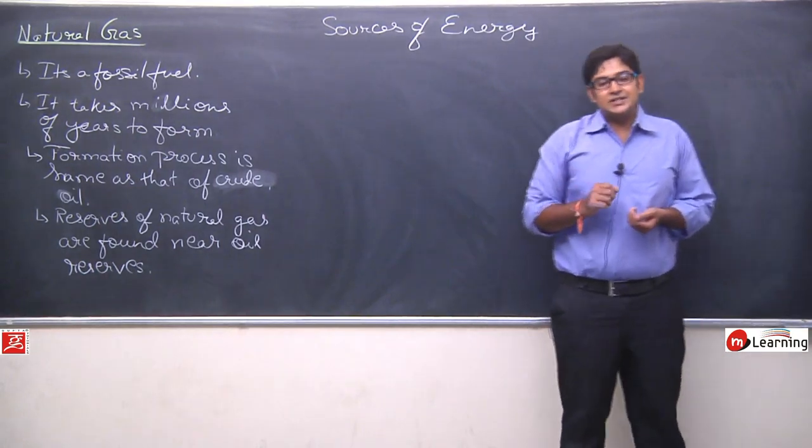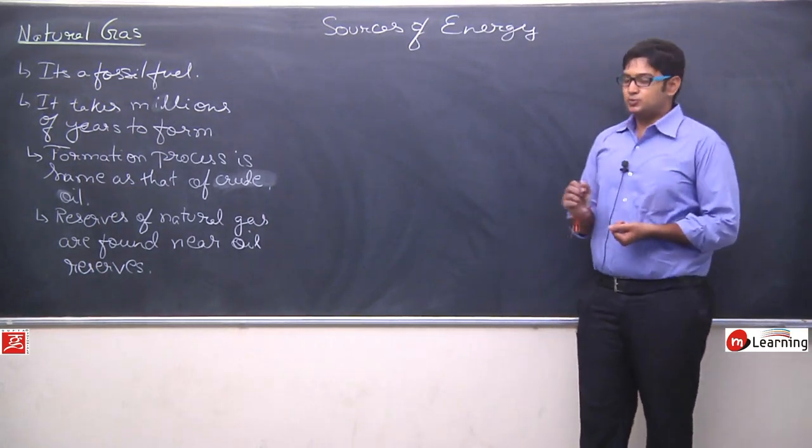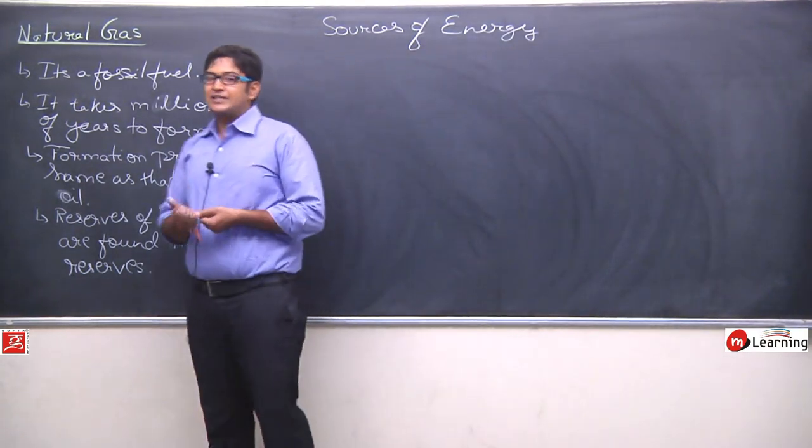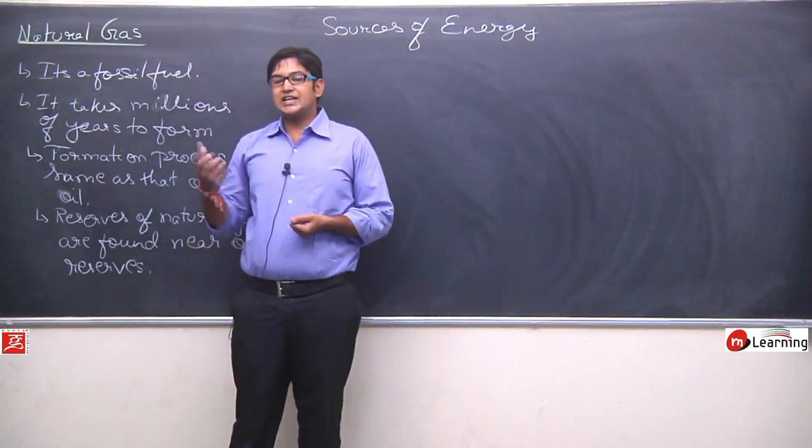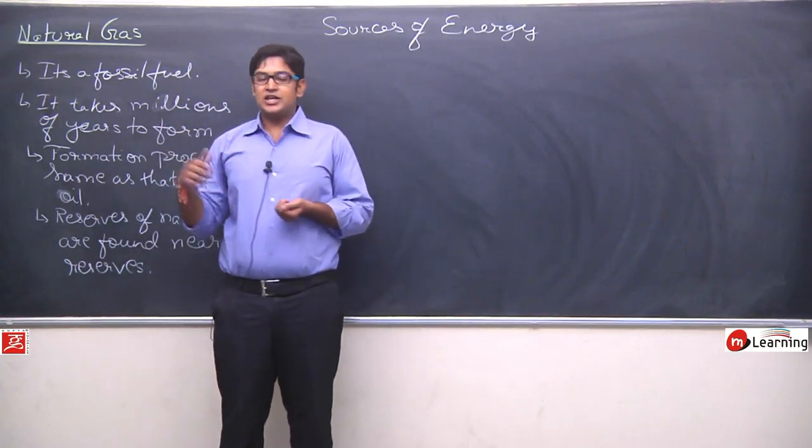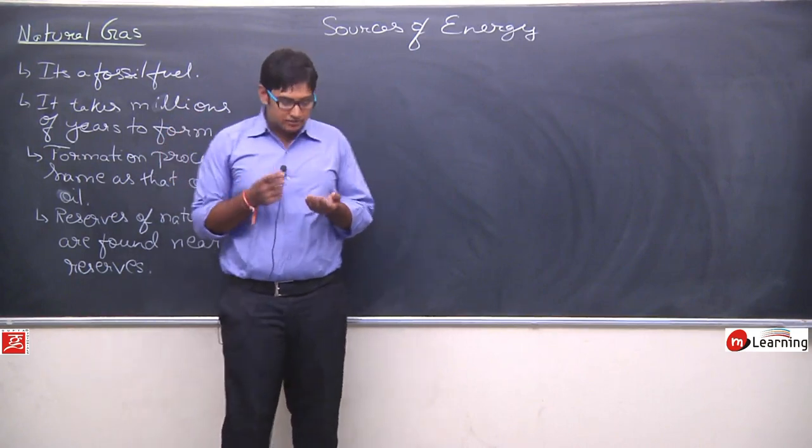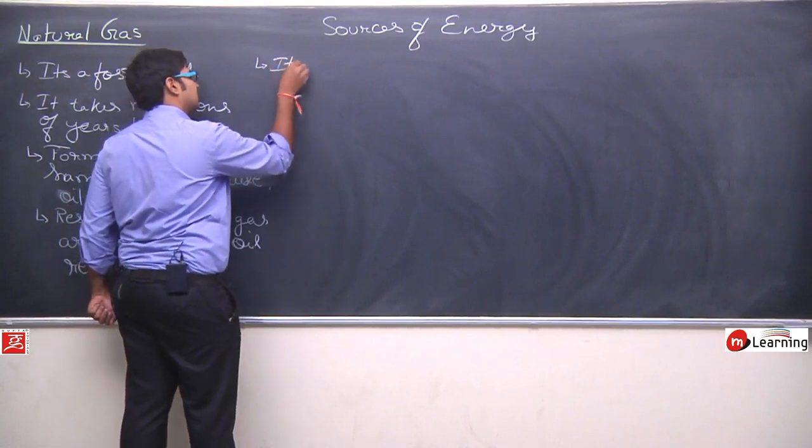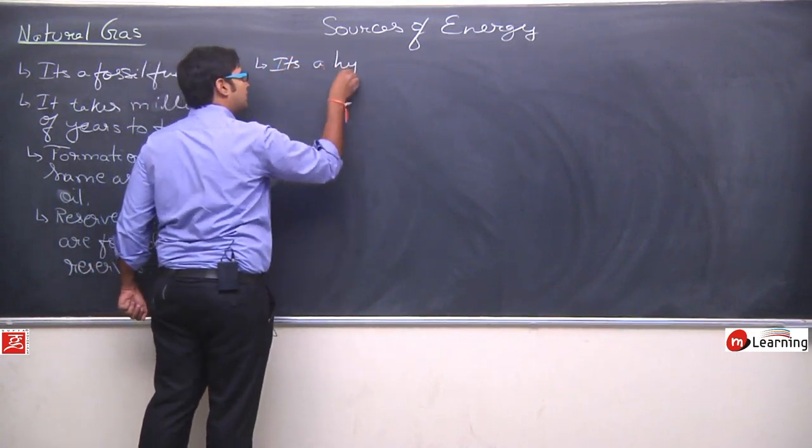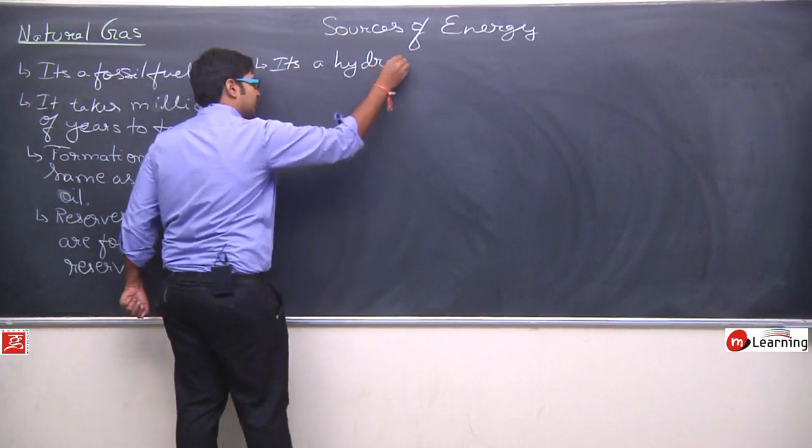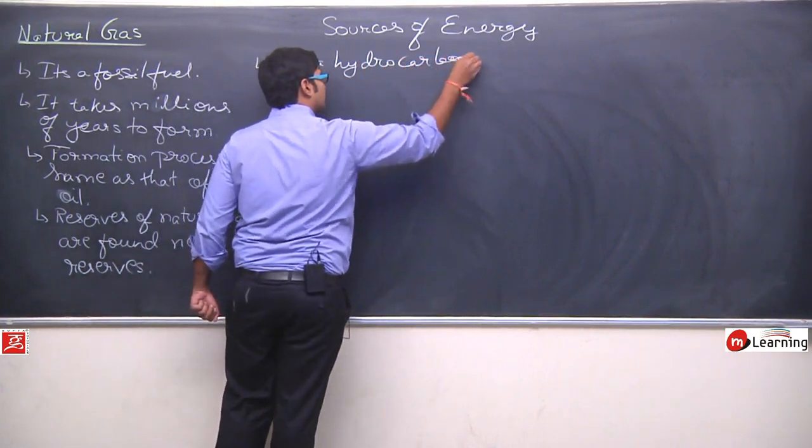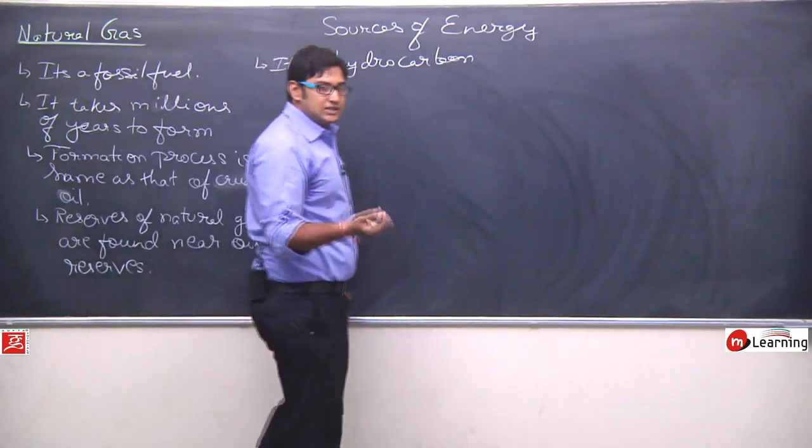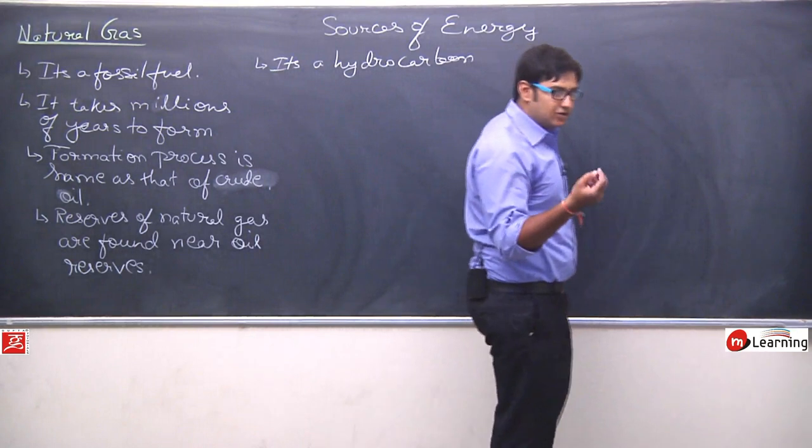Now, natural gas is formed by plants and animals, the old plants and animals that died, their decay, due to high pressure and high temperature applied on them natural gas is formed. And because they are formed from living organisms, that's why natural gas is a hydrocarbon.